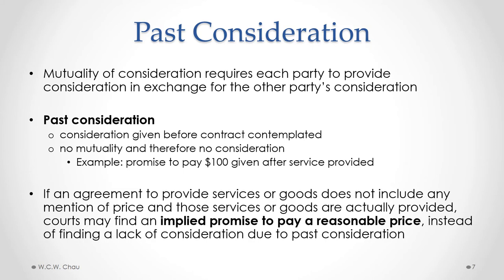An exception to that treatment is where if an agreement to provide services or goods does not include any mention of price and those services or goods are actually provided, the court may find an implied promise to pay a reasonable price instead of finding a lack of consideration due to past consideration. So if my neighbor agreed to mow my lawn and we didn't talk about a price or mention it being a favor, and then my neighbor mows my lawn and asks for payment, a court could interpret that as an implied promise on my part to pay a reasonable price even though we did not discuss or negotiate a specific price.